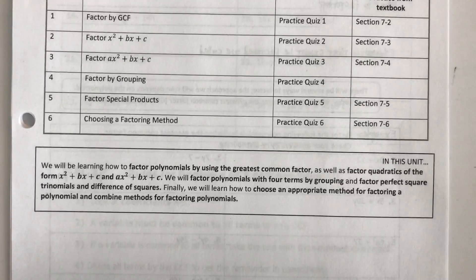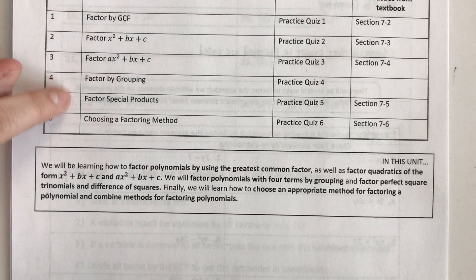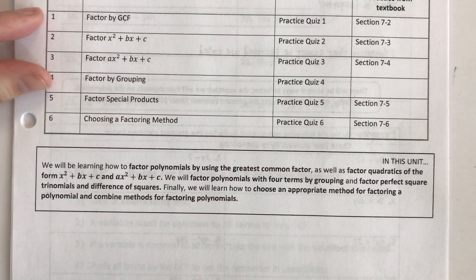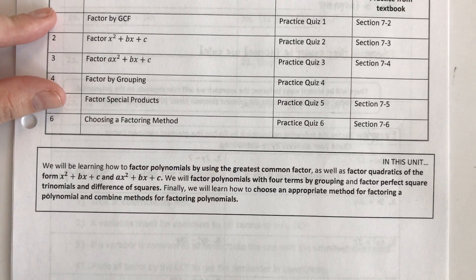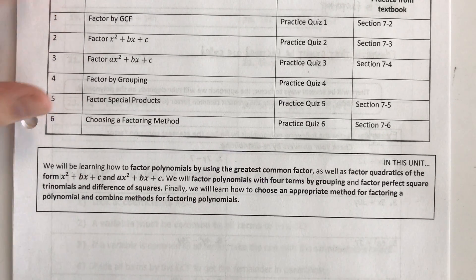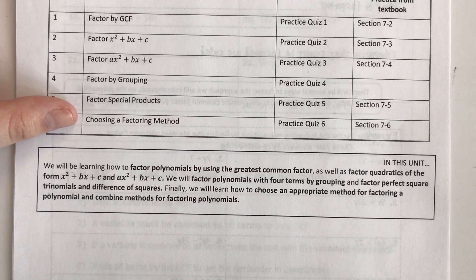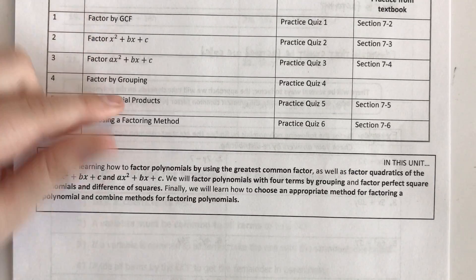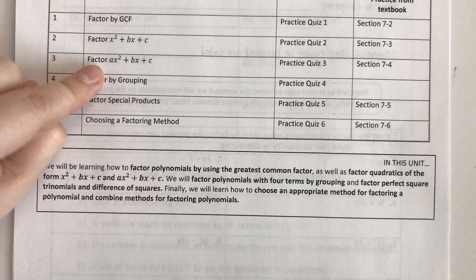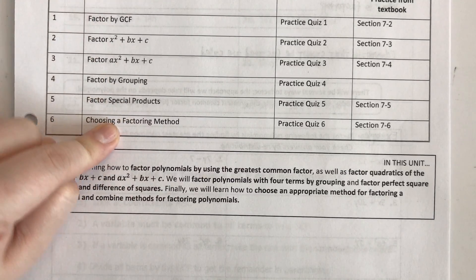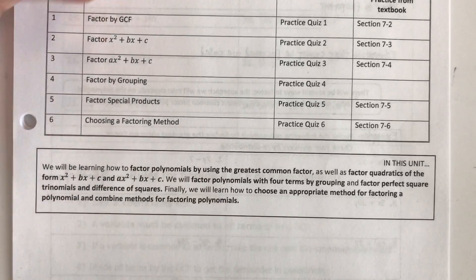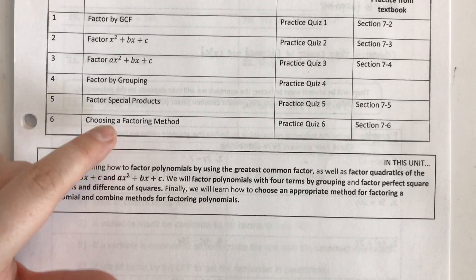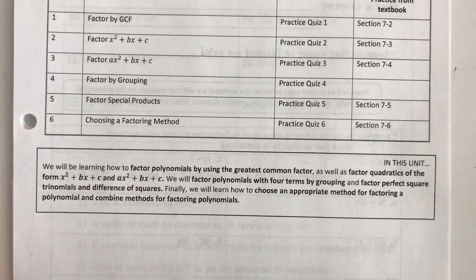This unit is basically all about the different ways you can factor a polynomial. Concepts 1 through 5 are all about different ways of factoring, and then concept 6 is where we get to combine all of these — you use your knowledge of factoring to decide how to factor a certain polynomial. It kind of culminates in this last concept, and it's a really important concept.